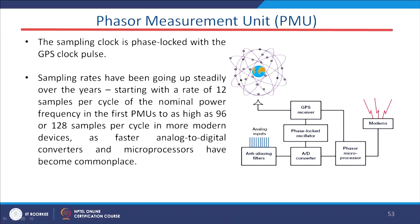The PMU sampling clock is phase-locked with the GPS clock pulse — this is very important. The phase-locked oscillator and the GPS clock are locked together, so that the ADC will start converting and sampling the analog signal to the digital domain.